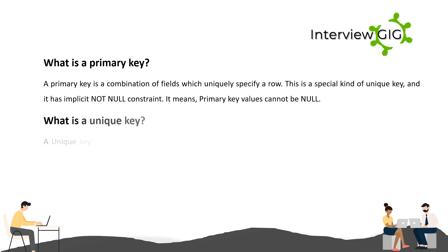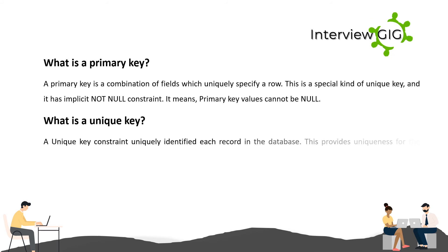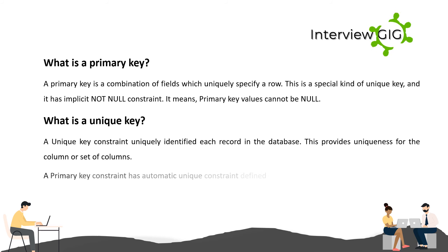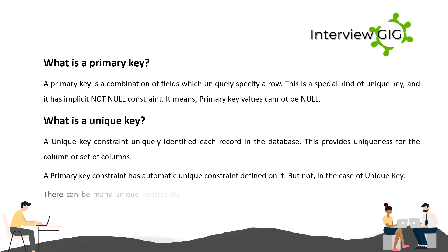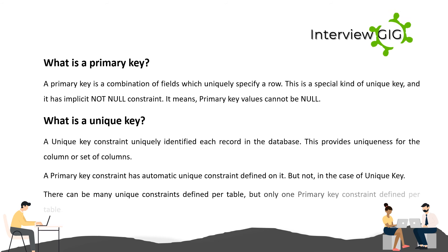What is a unique key? A unique key constraint uniquely identifies each record in the database. It provides uniqueness for a column or set of columns. A primary key constraint has an automatic unique constraint defined on it, but not in the case of a unique key. There can be many unique constraints defined per table, but only one primary key constraint per table.